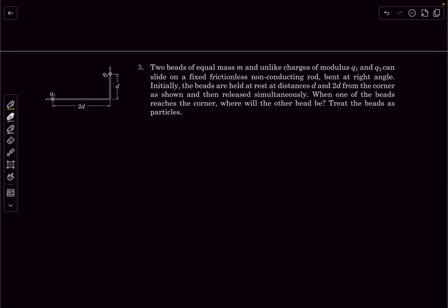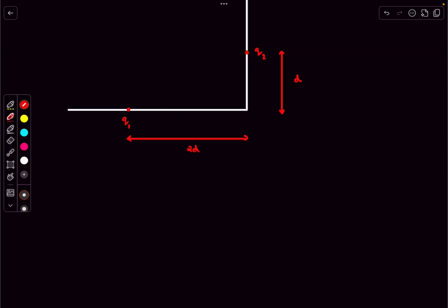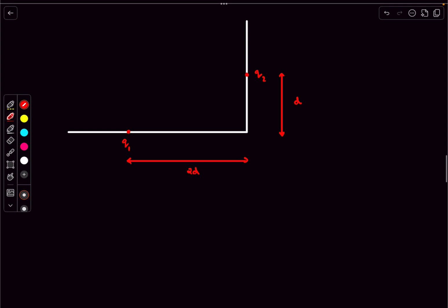Hello everyone, welcome back. Today's problem is from electrostatics - question number three from the book Pathfinder. In this question we have two beads with equal mass and unlike charges of modulus q1 and q2, and they can slide on fixed frictionless non-conducting rods that are bent at right angles. Initially the beads are held at rest at distances of d and 2d from the corner, then released simultaneously. When one bead reaches the corner, where will the other bead be? We treat the beads as point particles.